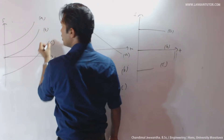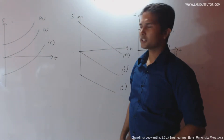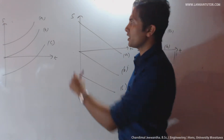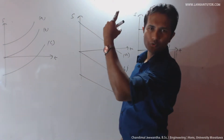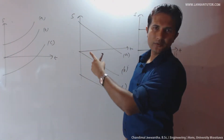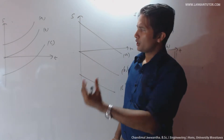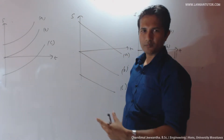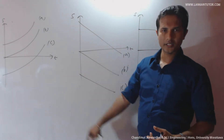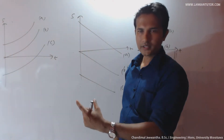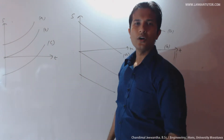Next, object moves with acceleration towards the positive direction. Considering simple A: starts from positive displacement, moves towards the positive direction with uniform acceleration. Considering simple B: object moves from the origin towards the positive direction with uniform acceleration. Considering simple C: object starts from negative displacement and moves towards the positive direction with uniform acceleration.